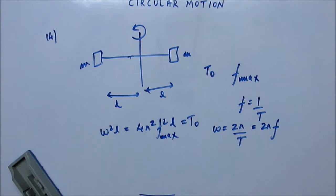Taking this as T0 will give us the maximum frequency, and you can see from here what will be the maximum frequency. F will come out as this.